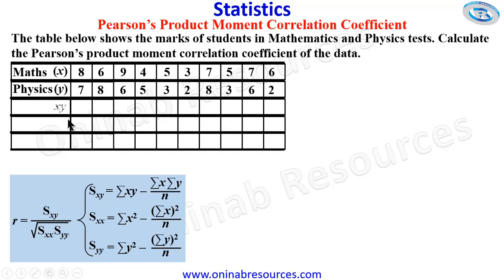We still need XY, X squared, and Y squared. So we start with XY, which means we are multiplying X by Y.